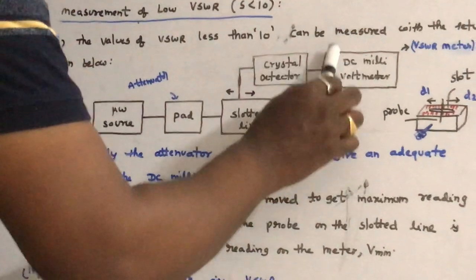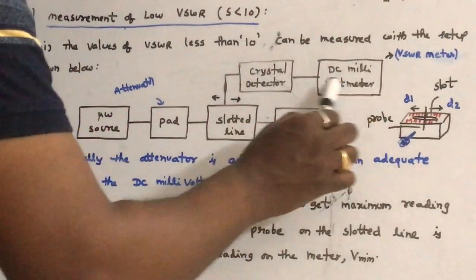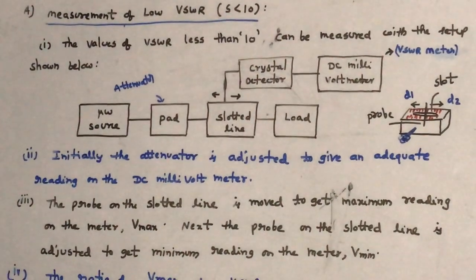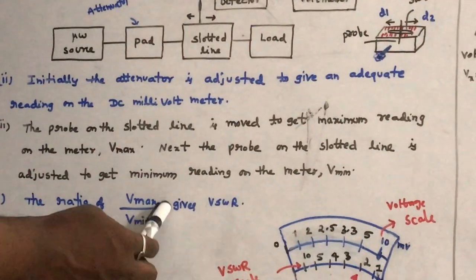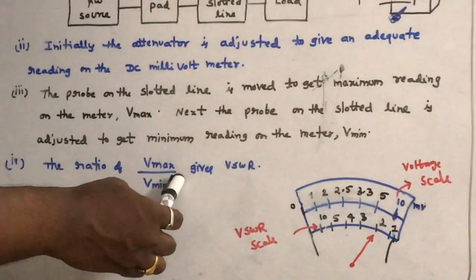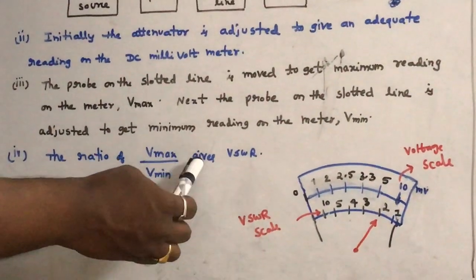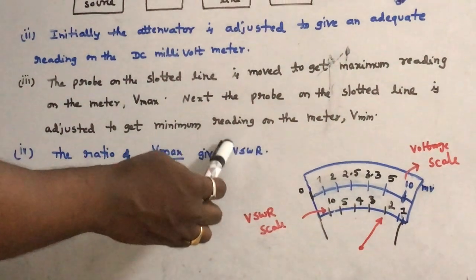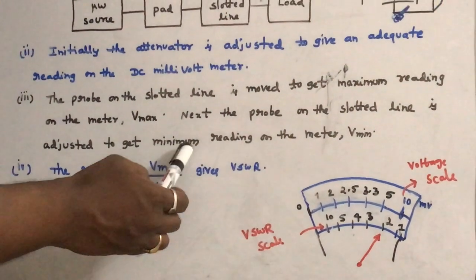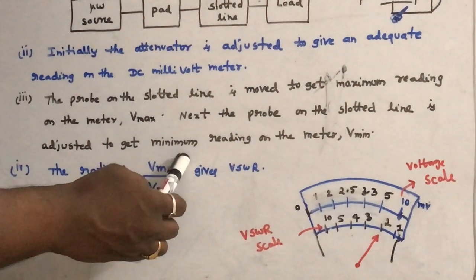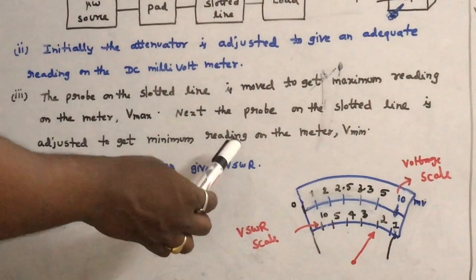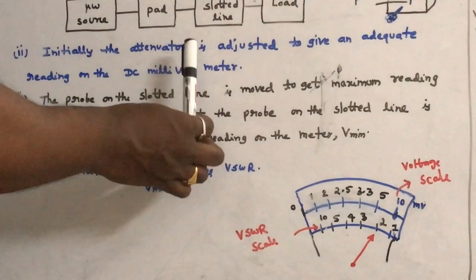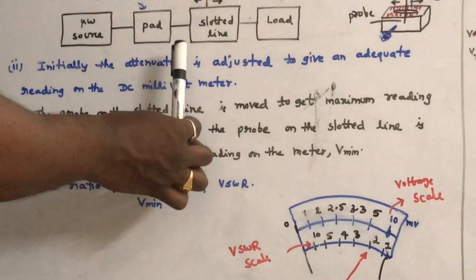We find V maximum and V minimum readings on the DC millivoltmeter. Then take the ratio of V max to V minimum readings from the meter, which gives VSWR as per the formula: maximum reading to minimum reading gives VSWR. This is the way we measure VSWR values less than 10.